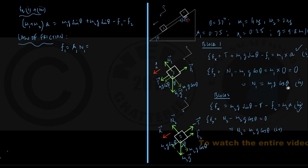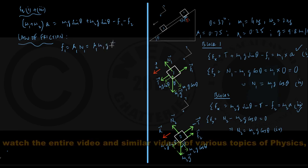But then equation number 2 has given me n1 is equal to m1g cos theta. And therefore, f1 is coming out to be mu1 into m1g into cos theta.